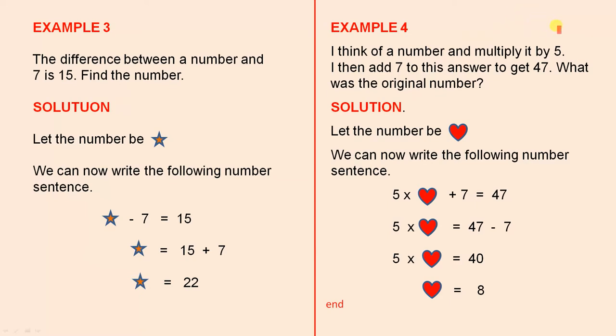Example 4. I think of a number and multiply it by 5. I then add 7 to this answer to get 47. What was the original number? Let the number be a heart. We can now write the following number sentence: 5 times the heart plus 7 is 47. So that means 5 times the heart must be 47 minus 7. So 5 times the heart must be 40, so the heart must be 8, because 5 8's are 40.